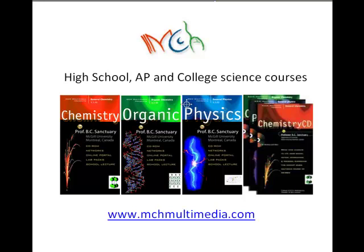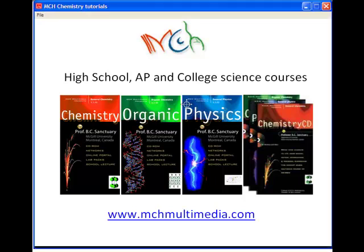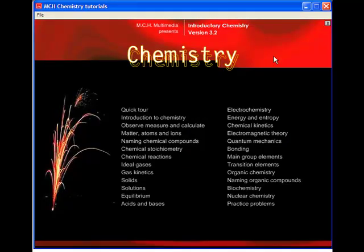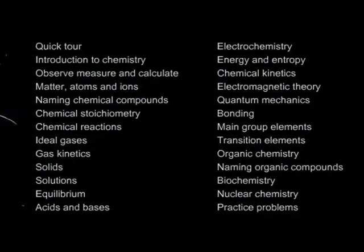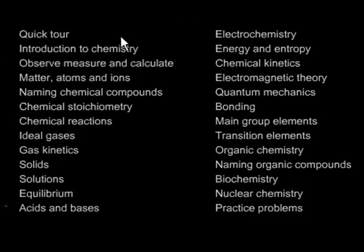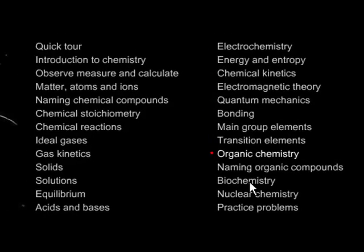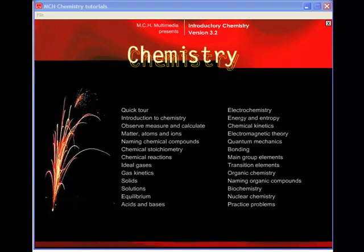Let's look at some of the table of contents of the courses. Here we have introductory chemistry, your first course in chemistry that assumes no prior knowledge. It goes through all the major introductory ideas that you encounter in your courses and goes on to study the topics that you will need: gas kinetics, solids, solutions, equilibrium, acids and bases, all the topics that are covered, quantum mechanics, transition elements, organic chemistry.